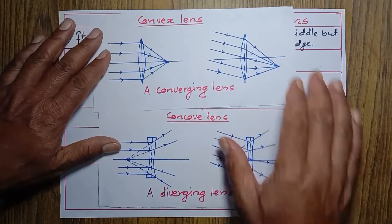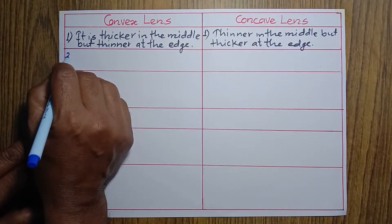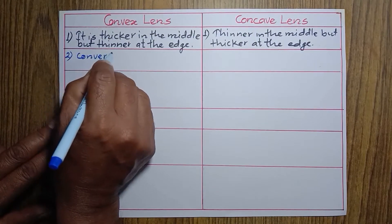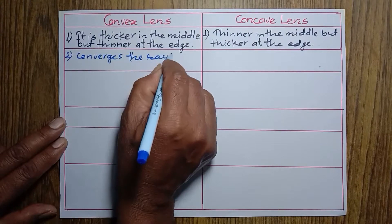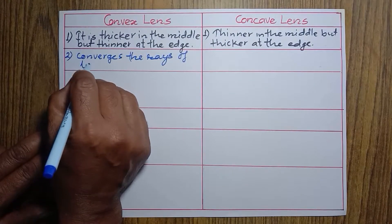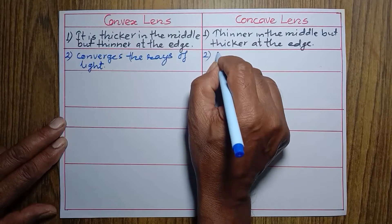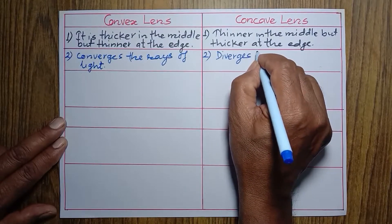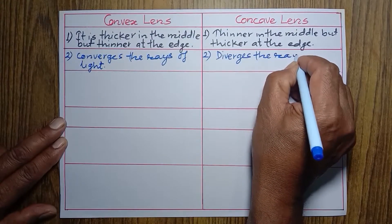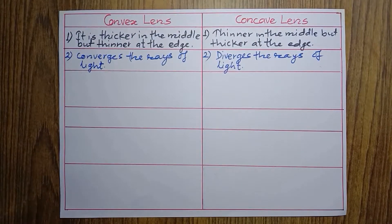That's why a concave lens is called a diverging lens, and a convex lens is called a converging lens. So we can say this is another difference: a convex lens converges the rays of light, while a concave lens diverges the rays of light. This is the second difference.